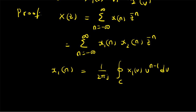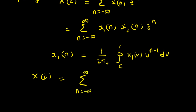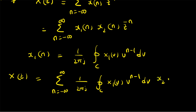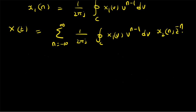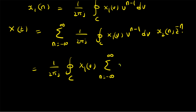We now substitute this definition into the summation. Therefore X(z) equals the summation from n = −∞ to +∞ of (1/2πj) times the closed contour integral over C of X1(v) · v to the power (n−1) dv, multiplied by x2(n) · z to the power −n. We can rewrite this by exchanging the summation and integral. So we have (1/2πj) times the closed contour integral over C of X1(v), then the summation of x2(n) · z to the power −n · v to the power n, which combines as (z/v) to the power −n, along with v to the power −1 and dv.